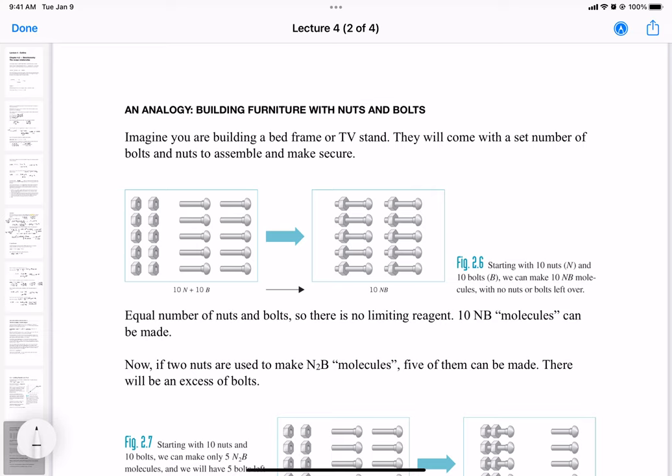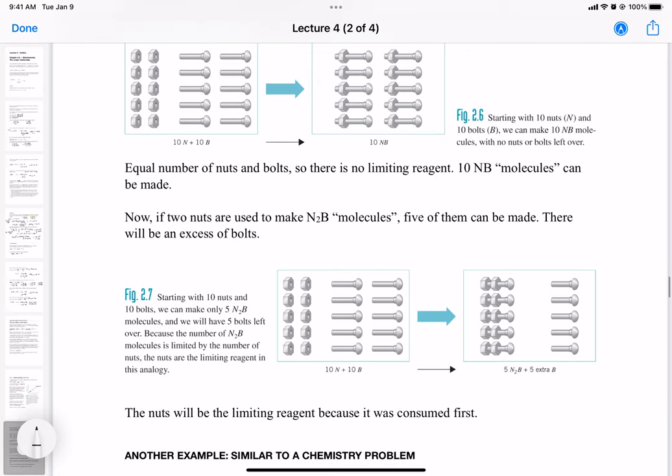So imagine we want to make 10 NB molecules which require one nut and one bolt to assemble. If we have an equal number of them, 10 nuts and 10 bolts, we can make 10 NB molecules. Now if we are trying to make a molecule like N2B which has two nuts and one bolt per molecule, only five of them can be made because for every bolt we require two nuts. And if we go down to our scheme here, we see that the total number of molecules we can only make five of them. And at the end there'll be an excess of bolts. So in this case, the nuts in this problem or example is the limiting reagent.